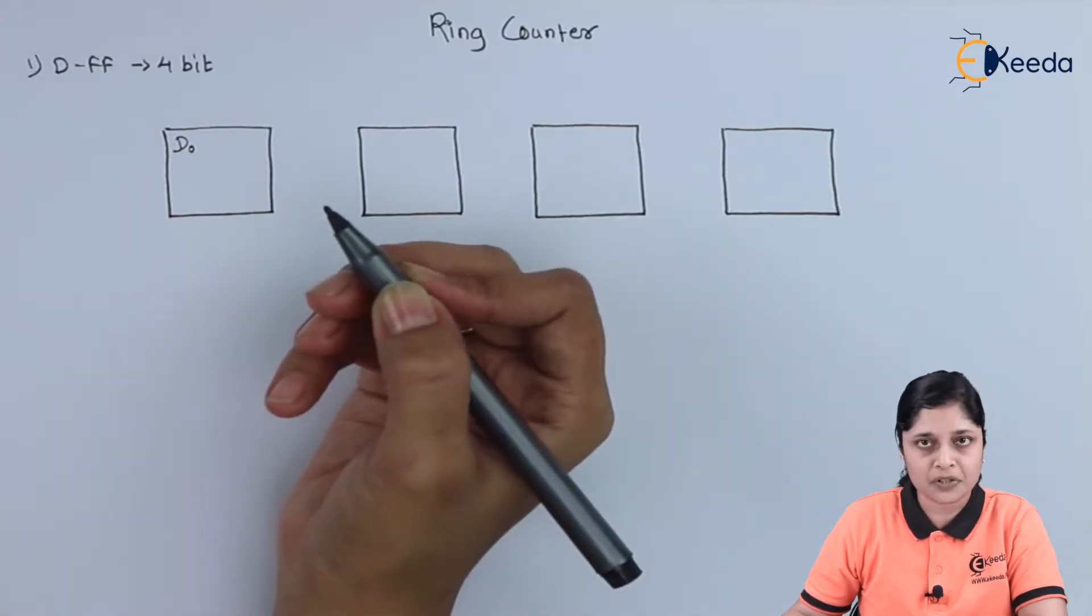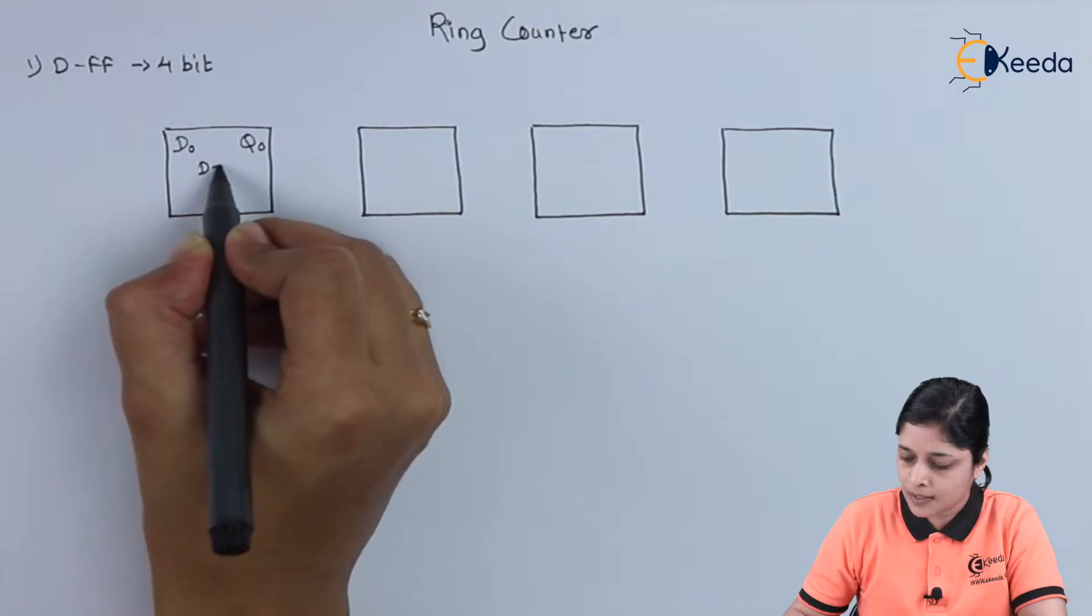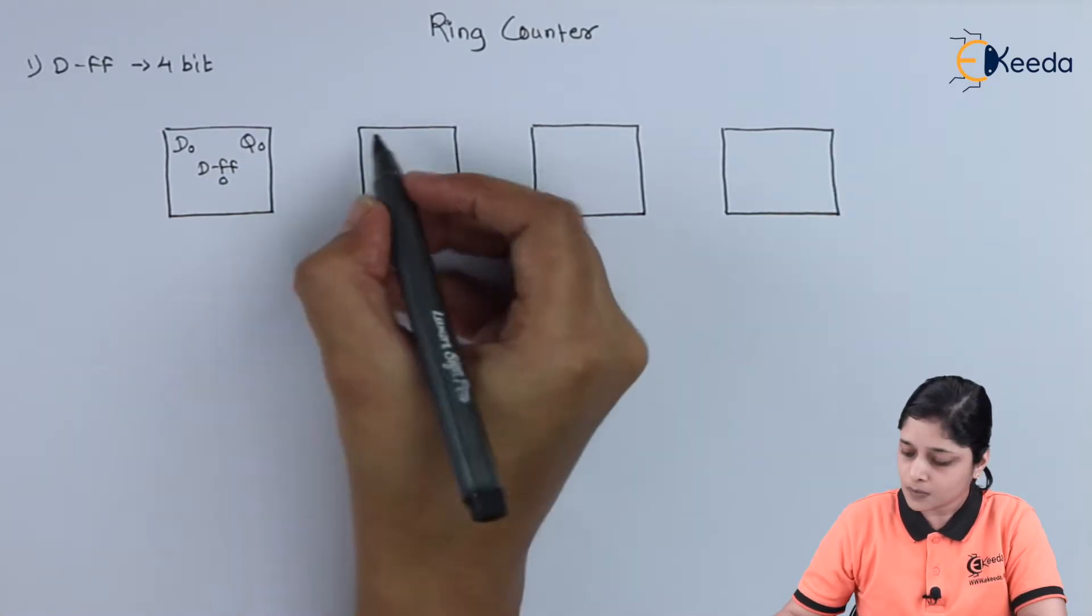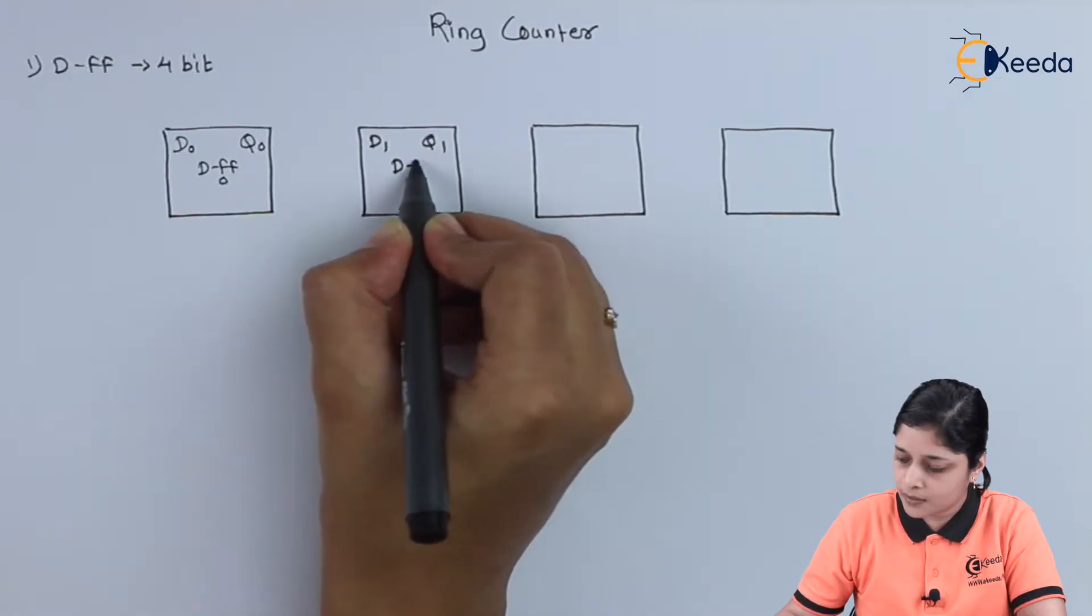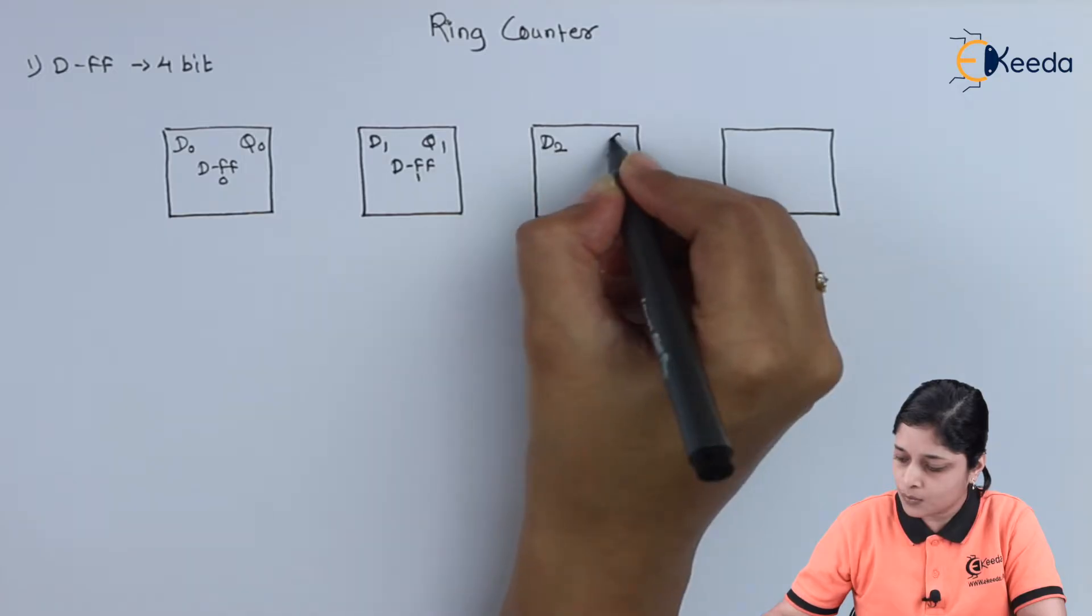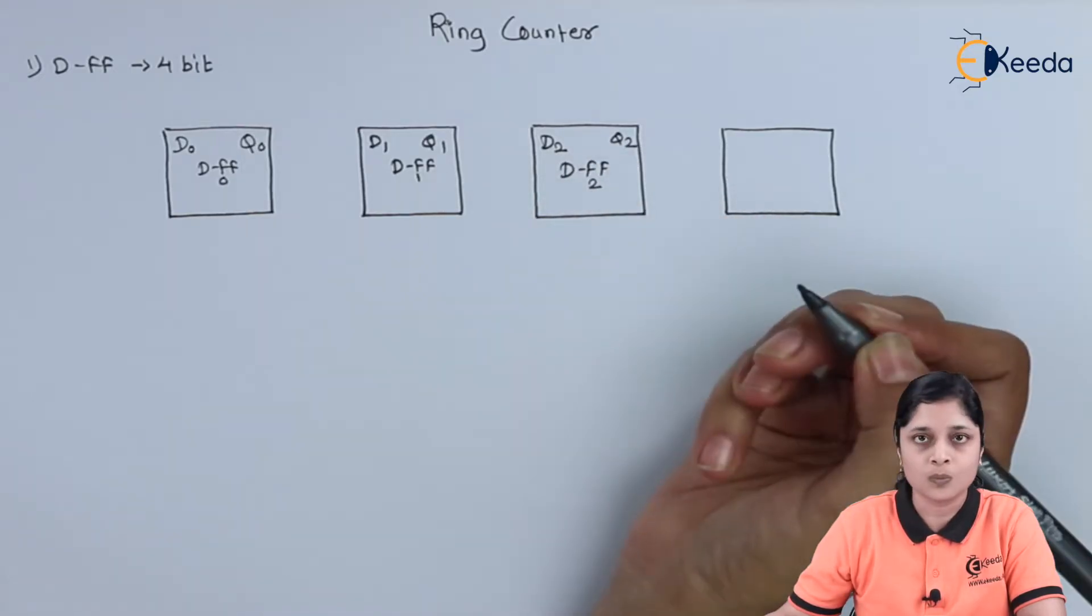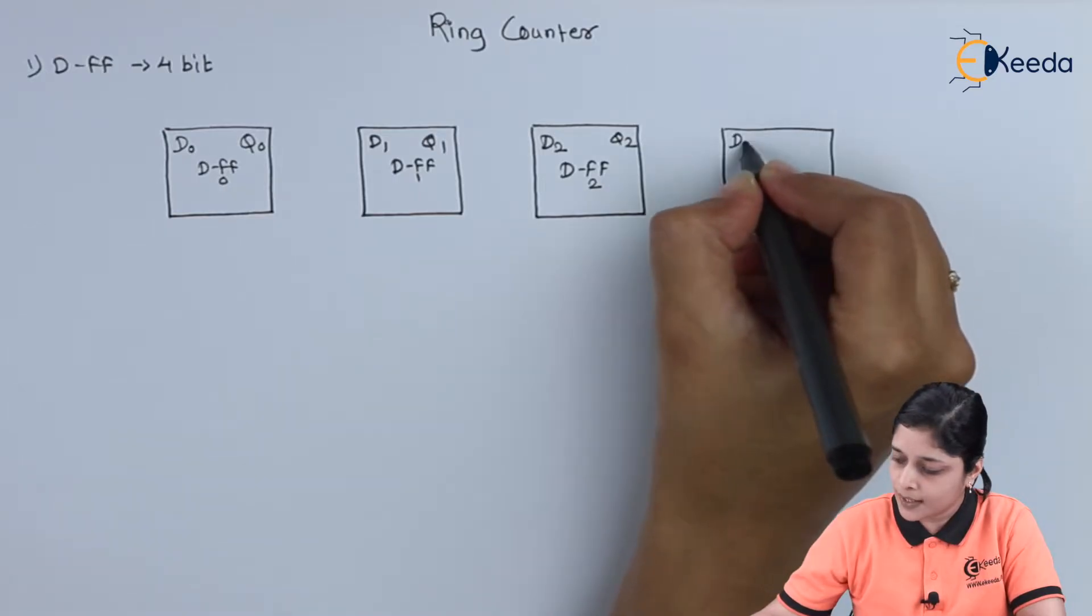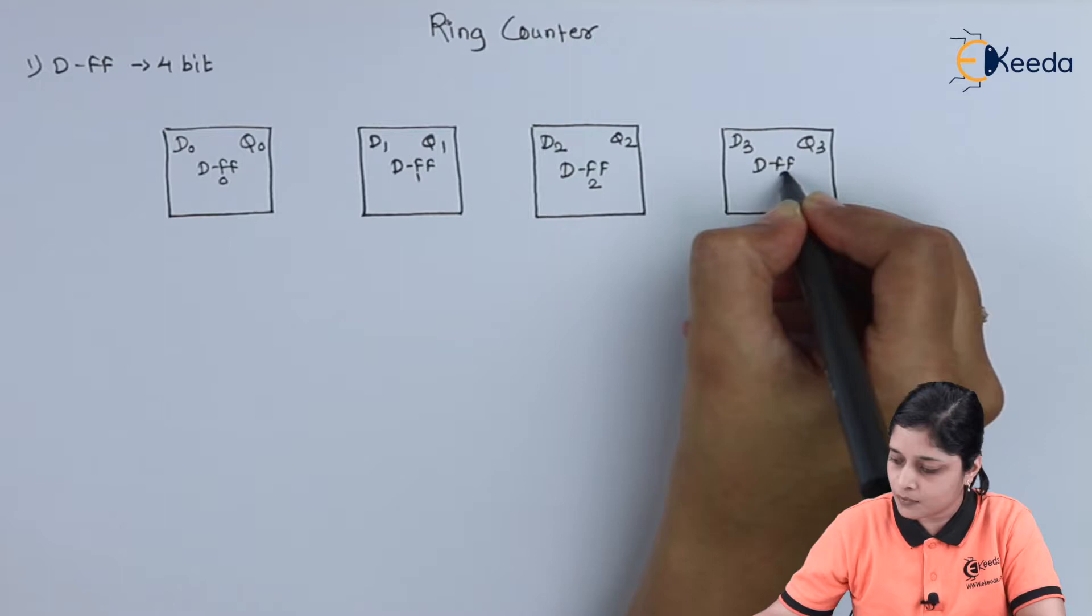These are the 4 D flip-flops. This is the first flip-flop D0, output is Q0, DFF 0. D1, Q1, DFF 1. D2, Q2, DFF 2. Then we have D3, Q3, DFF 3.